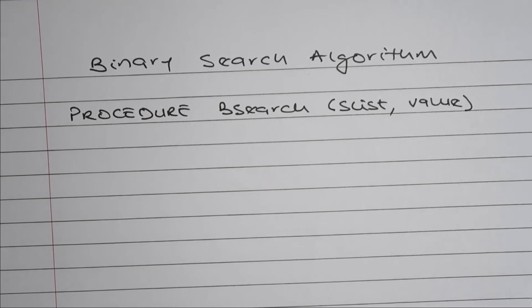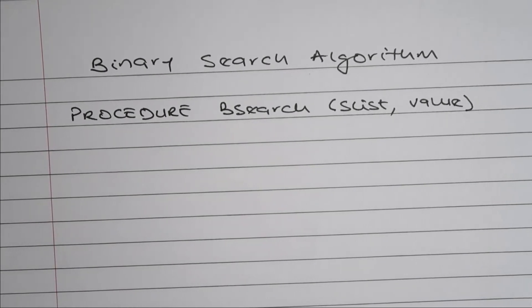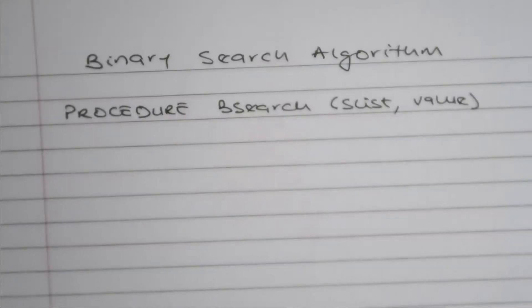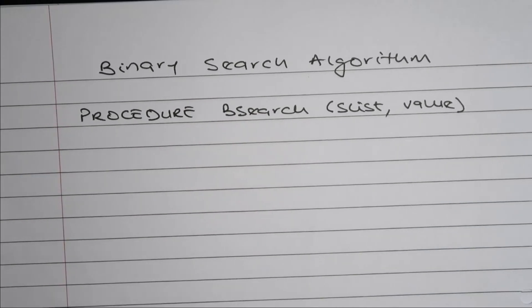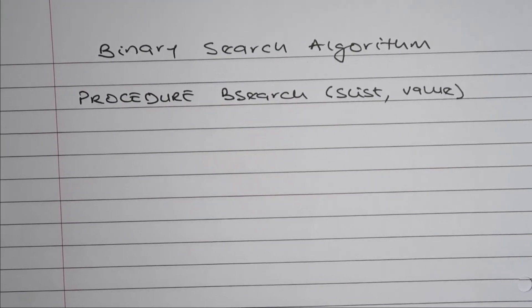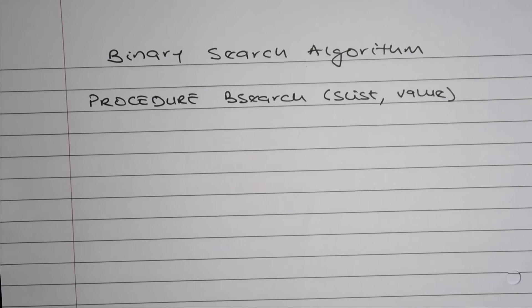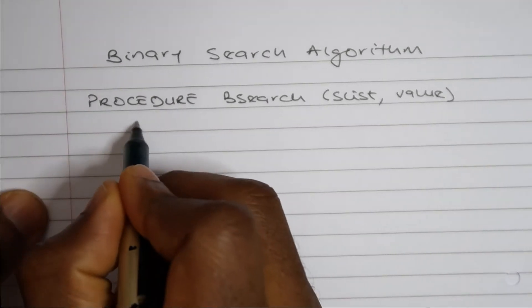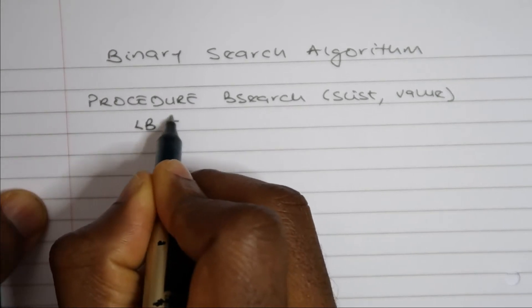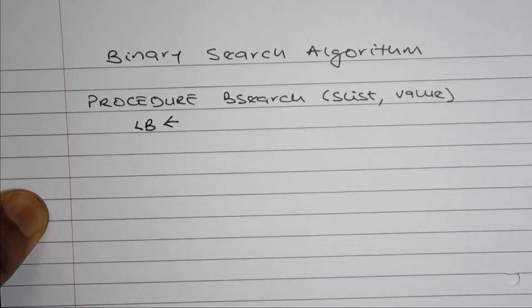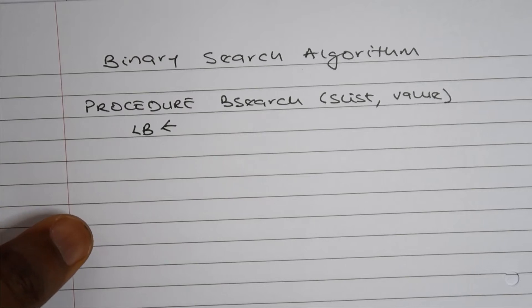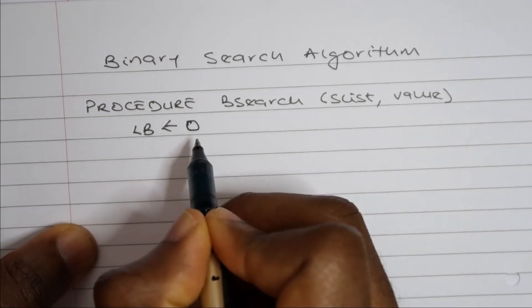Now there are three key pointers we need when we're working with a binary search: the lower bound, the upper bound, and the midpoint. Now the lower bound would always be the first item in the list. So the lower bound will be the index position of that first item in the list, and we know the index position of the first item in the list is zero.